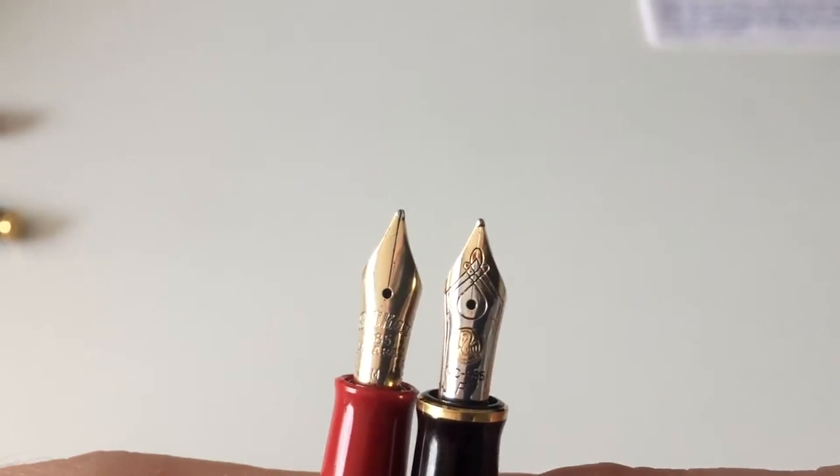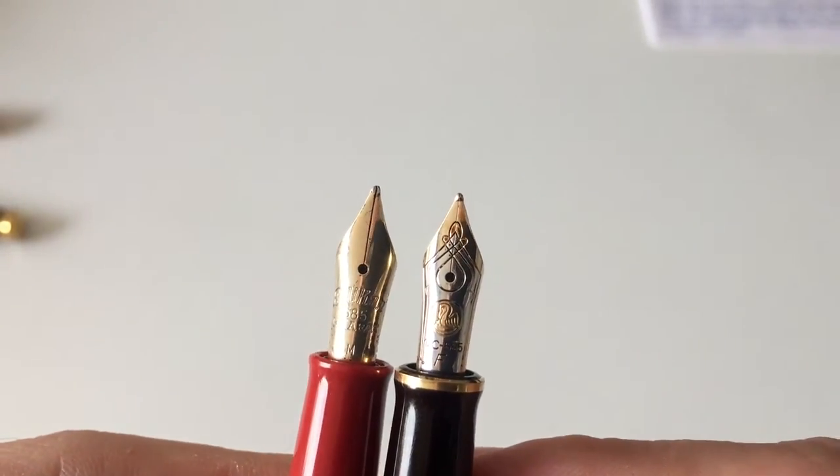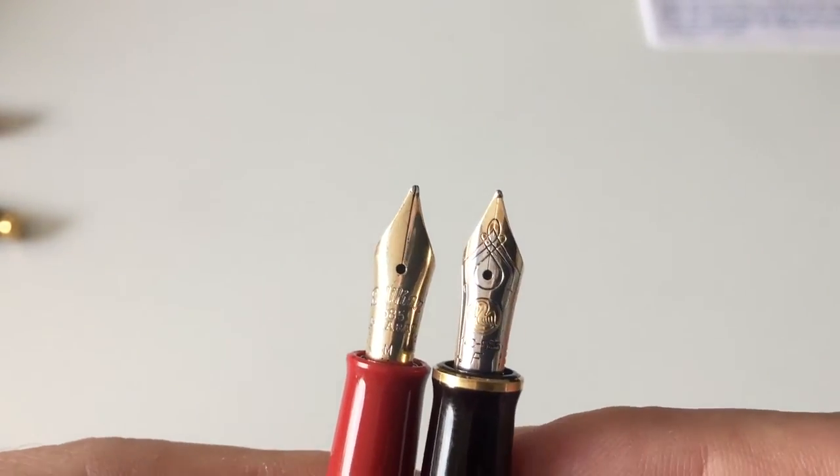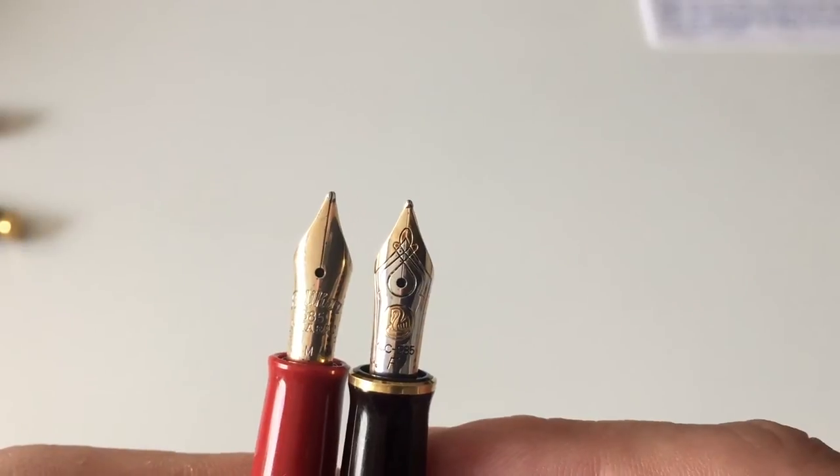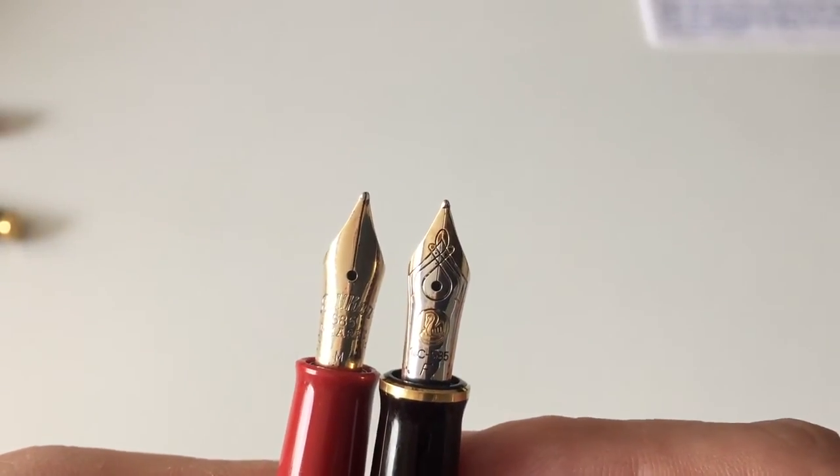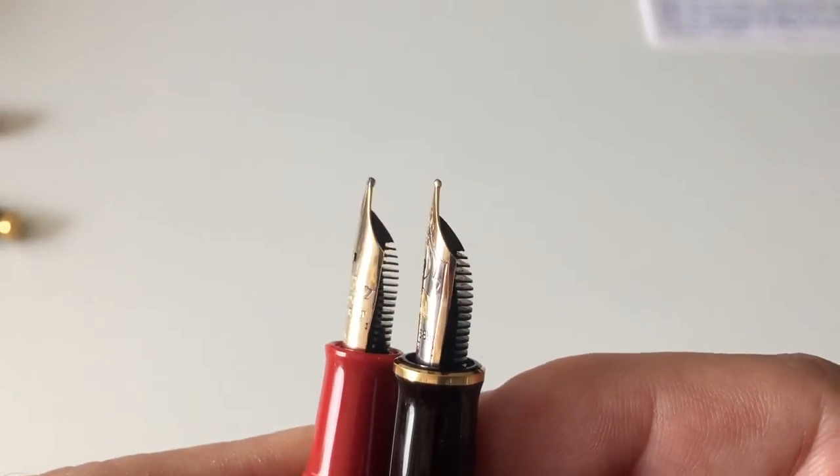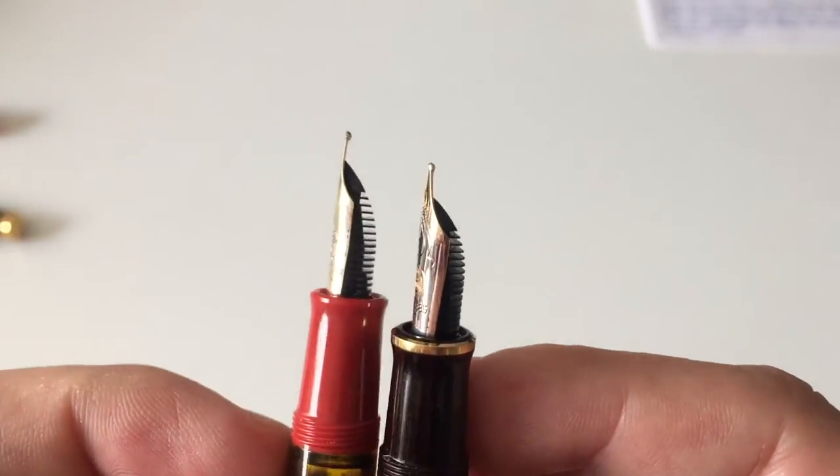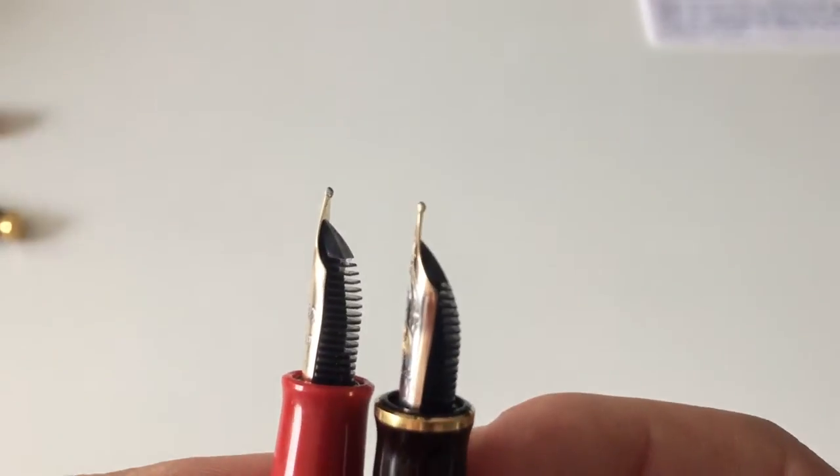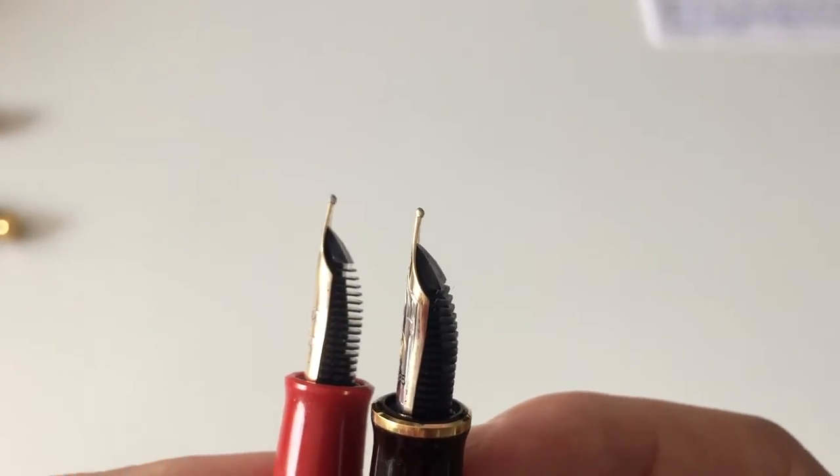If we compare that for a minute to the nib of an M400, you see that it's approximately—probably it's the same nib base that Pelikan uses. Not exactly sure, but the center hole and breather hole has exactly the same position. The nib shoulders have approximately the same width. The whole nib appearance looks pretty much exactly the same.